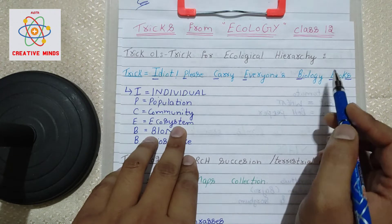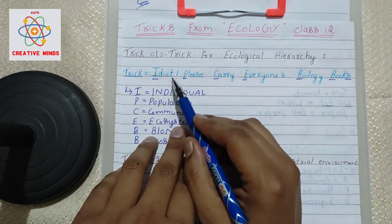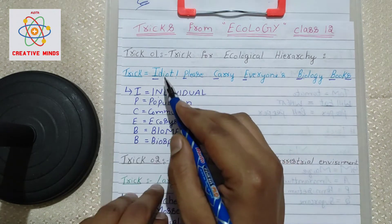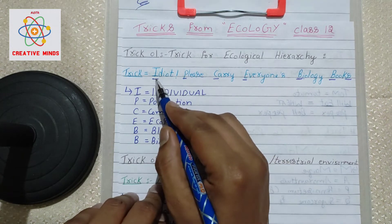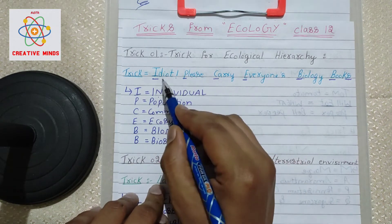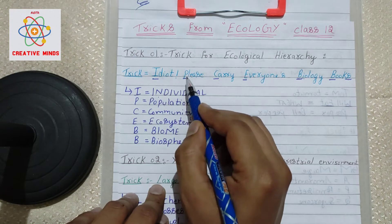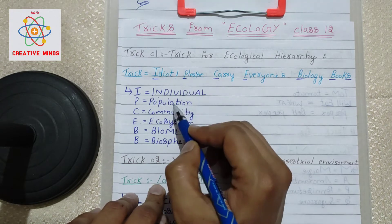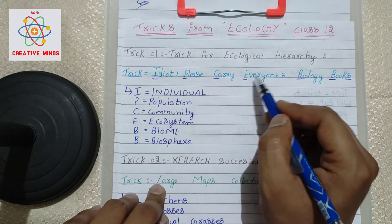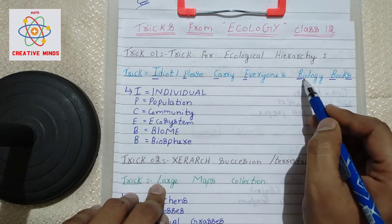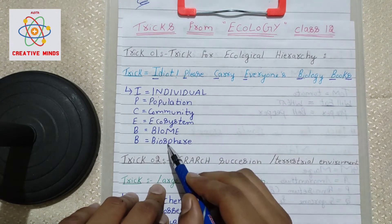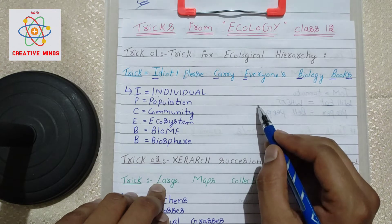We just have to focus on the first letters of each word. From 'Idiot' — I for Individual; 'Please' — P for Population; 'Carry' — C for Community; 'Everyone's' — E for Ecosystem; 'Biology' — B for Biome; and 'Books' — B for Biosphere.